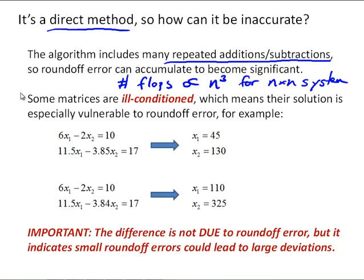Another situation is that some matrices are ill-conditioned. And what we mean by that is that their solution is especially vulnerable to roundoff error. So consider this example, just a 2 by 2 system. In the first case, the results are x1 is 45 and x2 is 130, and the only thing that's different is one coefficient changing from 3.85 to 3.84. And we see the solution is radically different.